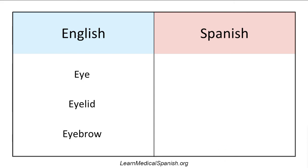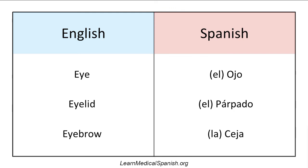Eye. El ojo. El ojo. And for bonus points, how would you say eyes, plural? Los ojos. Los ojos. Eyelid. El párpado. El párpado. Eyebrow. La ceja. La ceja.